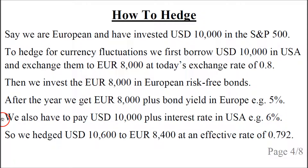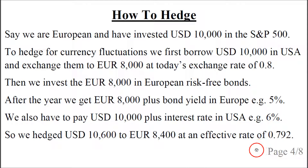We also have to repay the loan of 10,000 plus the interest rate in the United States, which is 6 percent in this example. So we have hedged 10,600 US dollars to 8,400 euros, giving an effective exchange rate of approximately 0.792. This is quite close to our desired exchange rate of 0.8, so in this case the hedging worked quite well.